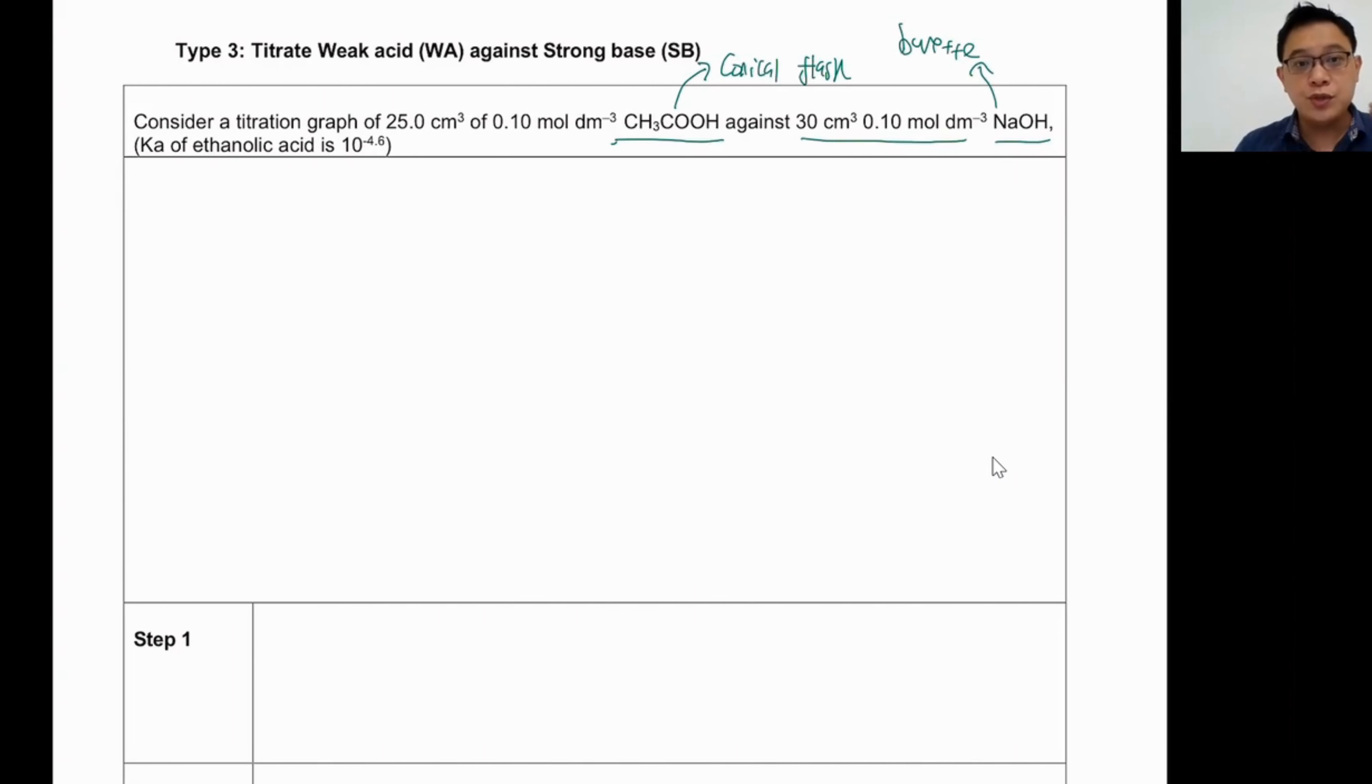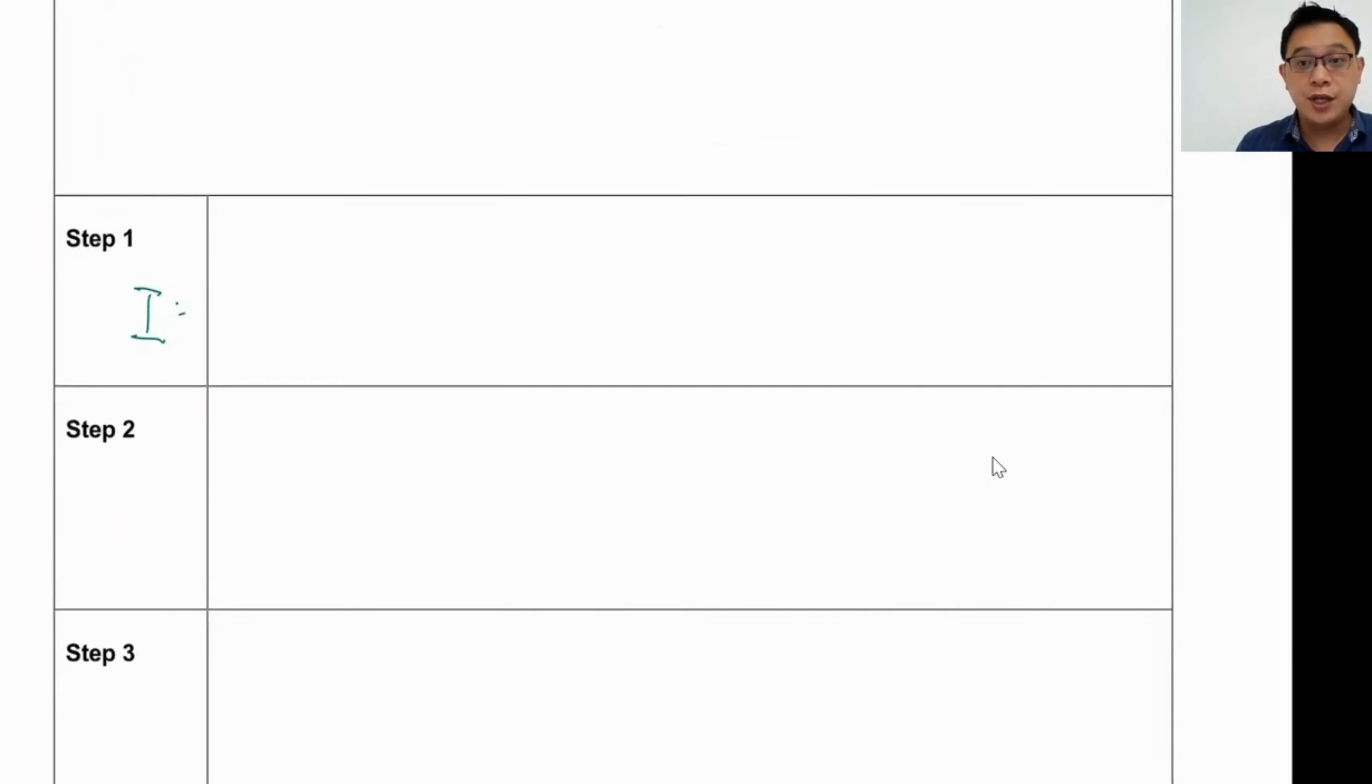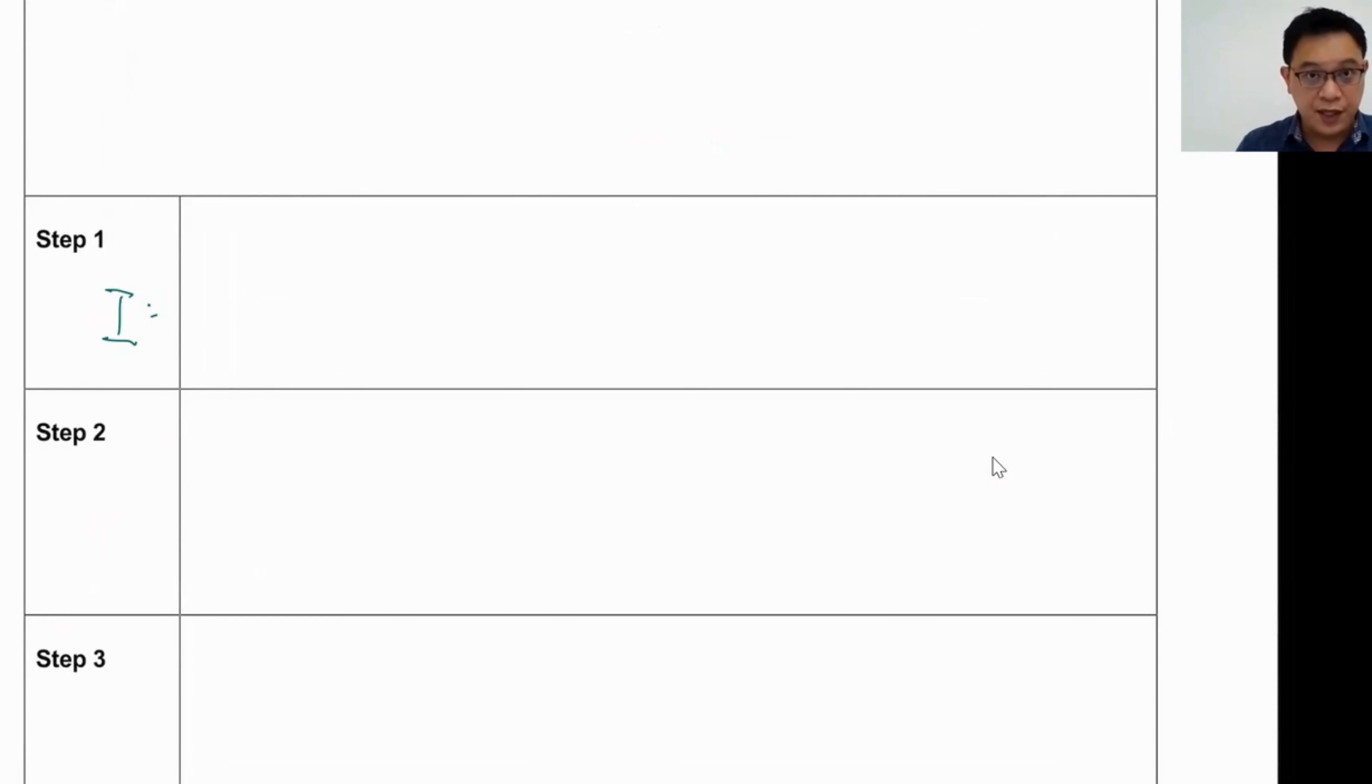So what we need to do is use the strategy 'I eat banana every day.' I begin with the first one, which is your I. I is the finding of the initial pH. The one that's present in the conical flask is your weak acid. So how to find the pH? Use the weak acid formula.